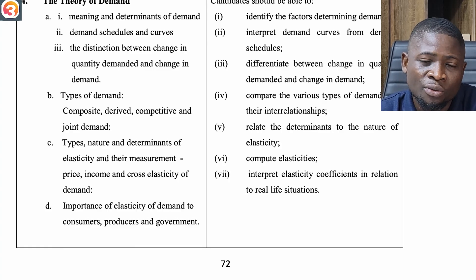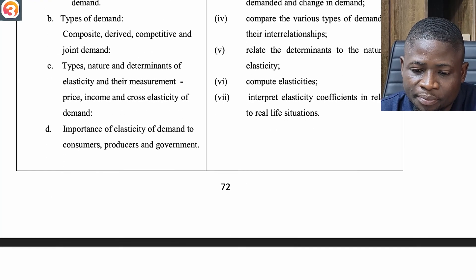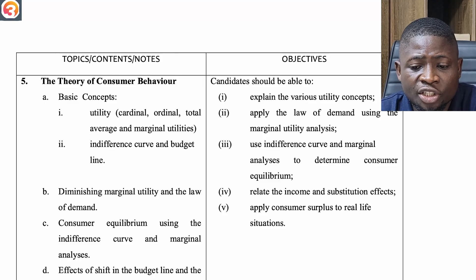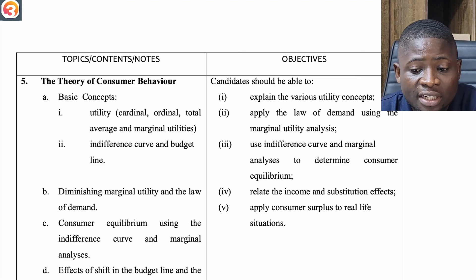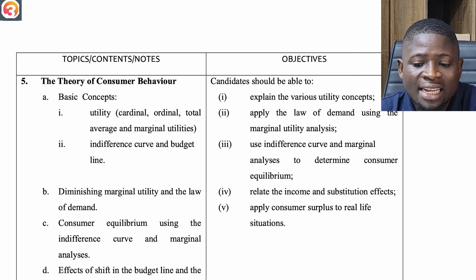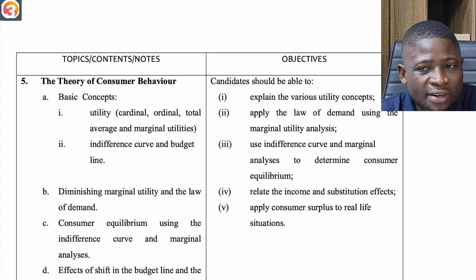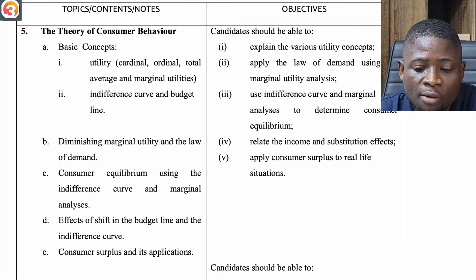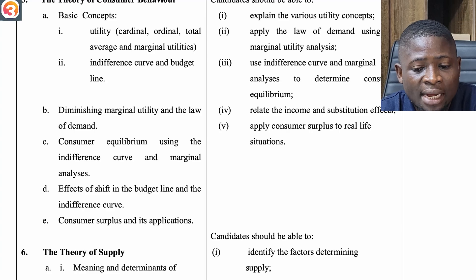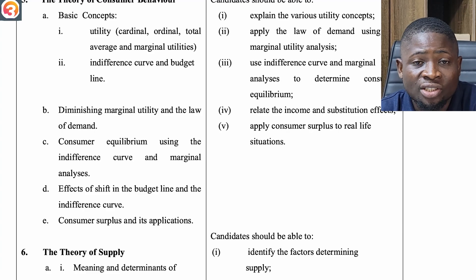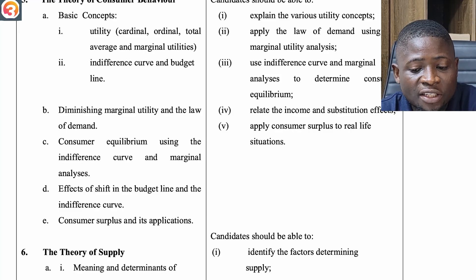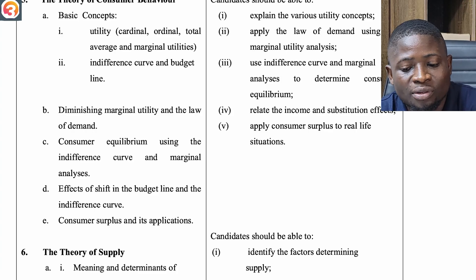Check our YouTube channel at O3 Schools — you have all the resources you need for success. The fifth topic is the Theory of Consumer Behavior. You'll cover basic concepts of utility — cardinal, ordinal, total, average and marginal utilities — indifference curves and budget lines, diminishing marginal utility and the law of demand, consumer equilibrium using indifference curve and marginal analysis, effects of shifts in the budget line and indifference curve, and consumer surplus and its applications.